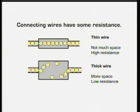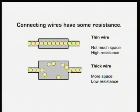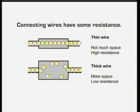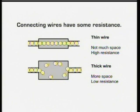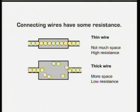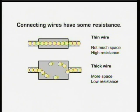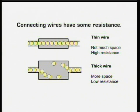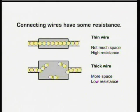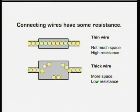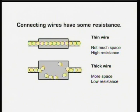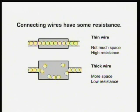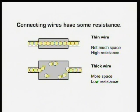As well as the components like bulbs and resistors, the connecting wires themselves have some resistance. Thin wires offer more resistance to current than thick wires, because they have less space for the current to flow. Long wires have more resistance than short wires of the same thickness.